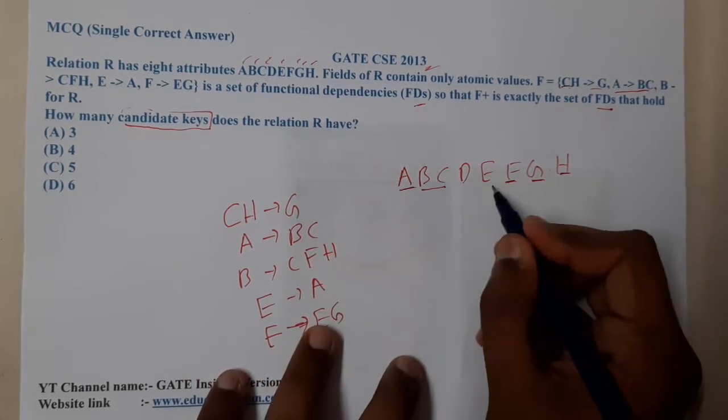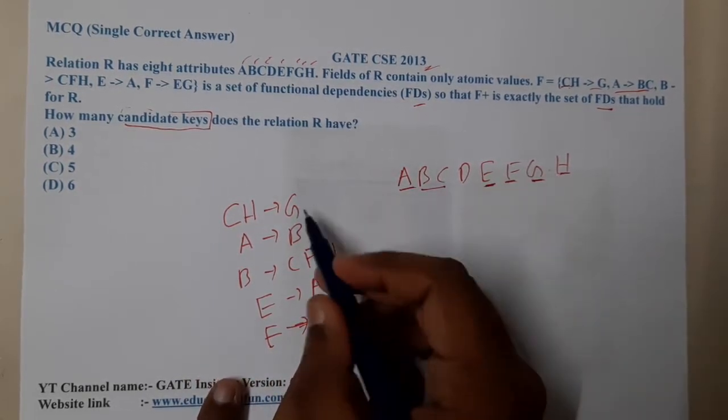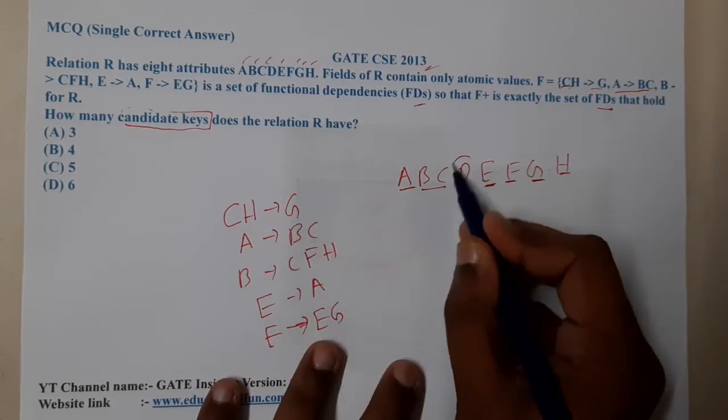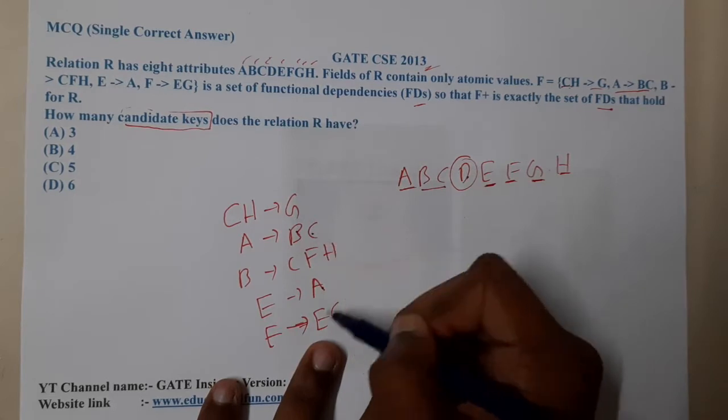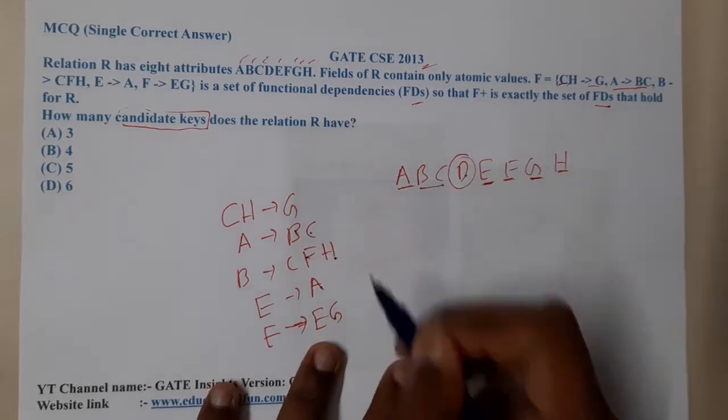Indirectly, the only variable which is missing is D. So A, B, C, D, E, F, G, and H - D is the mandatory thing to be clear now.